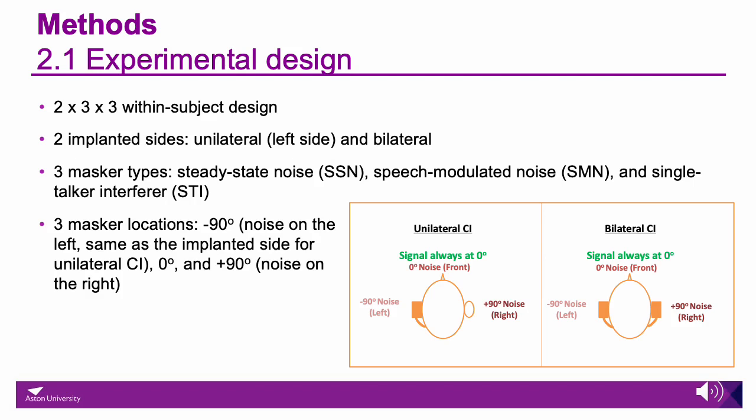The study uses a two-by-three within-subject design where we compare the implanted side — either unilateral or bilateral — with three masker types: steady-state noise, speech-modulated noise, and a single talker interferer for informational masking. We also have three masker locations: negative 90 degrees, which is on the same side as the implanted ear of the unilateral condition; zero degrees, which is noise right in front; and positive 90 degrees, which is noise on the right.